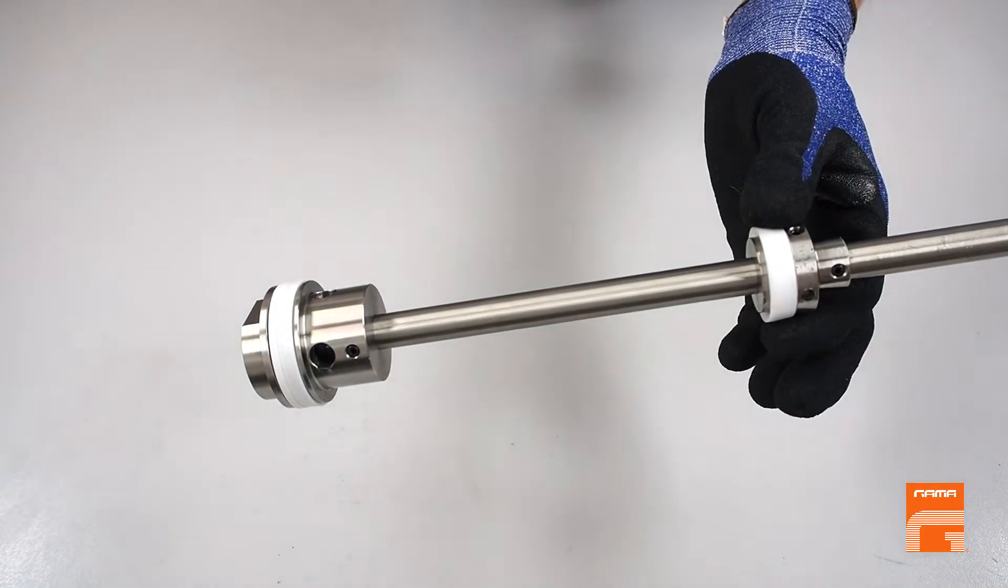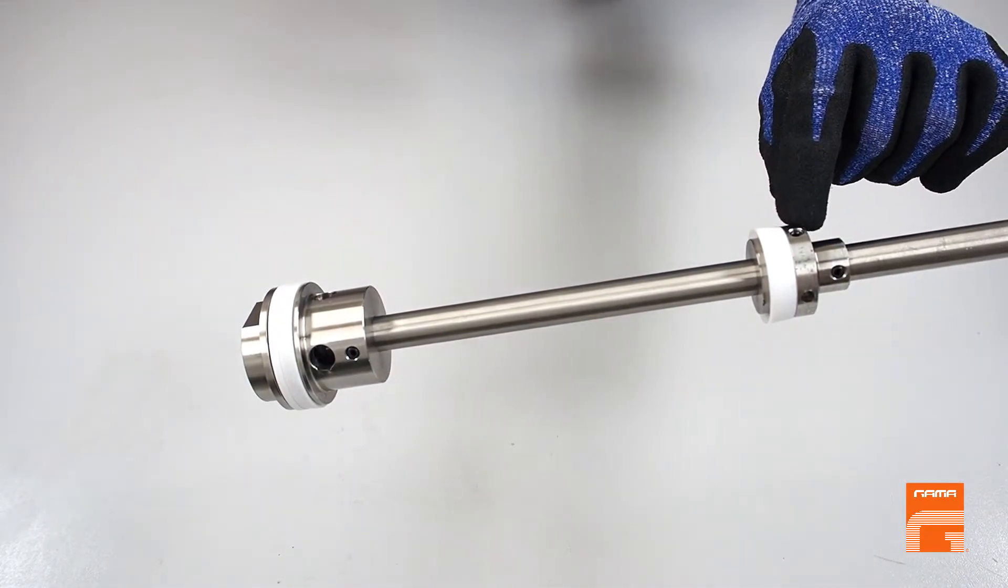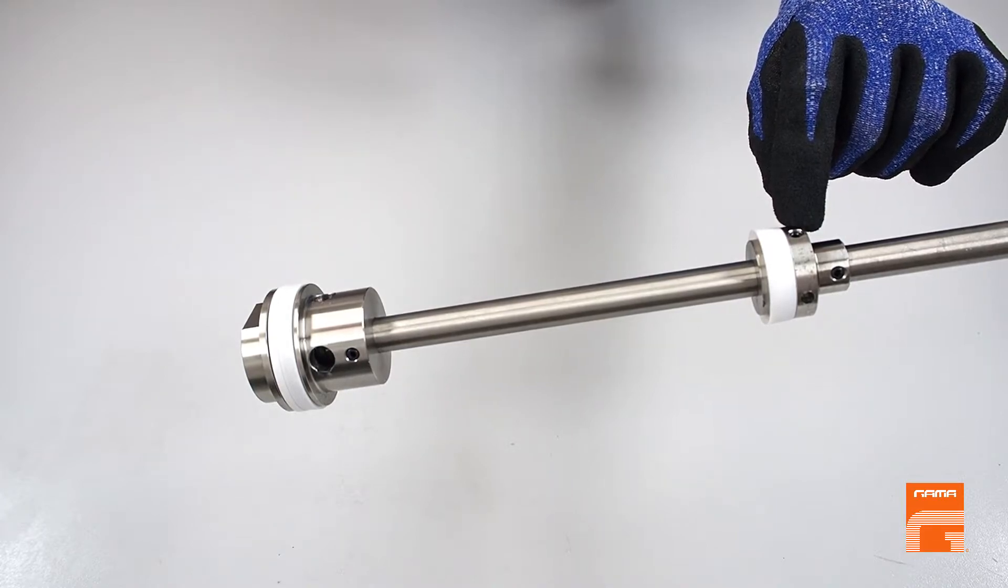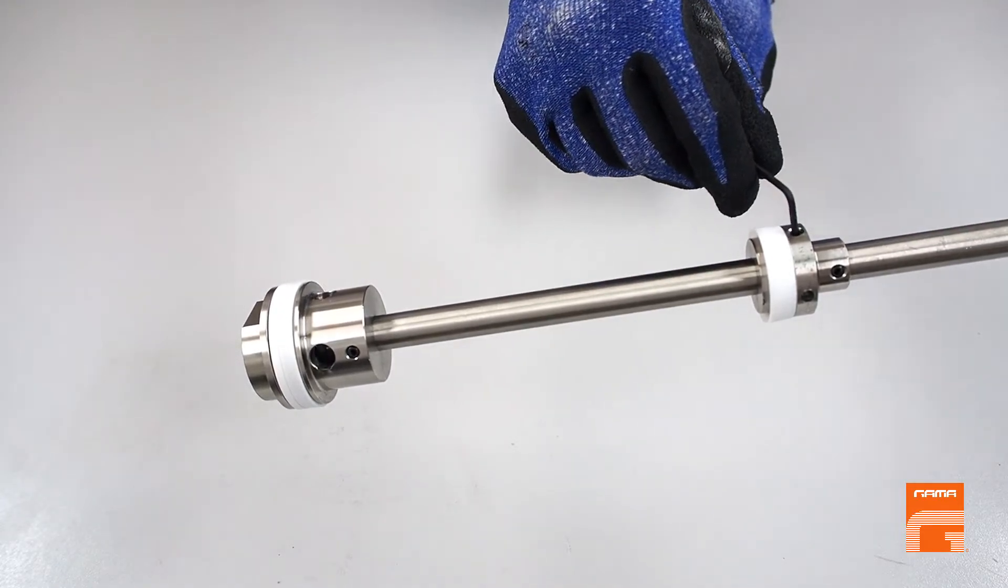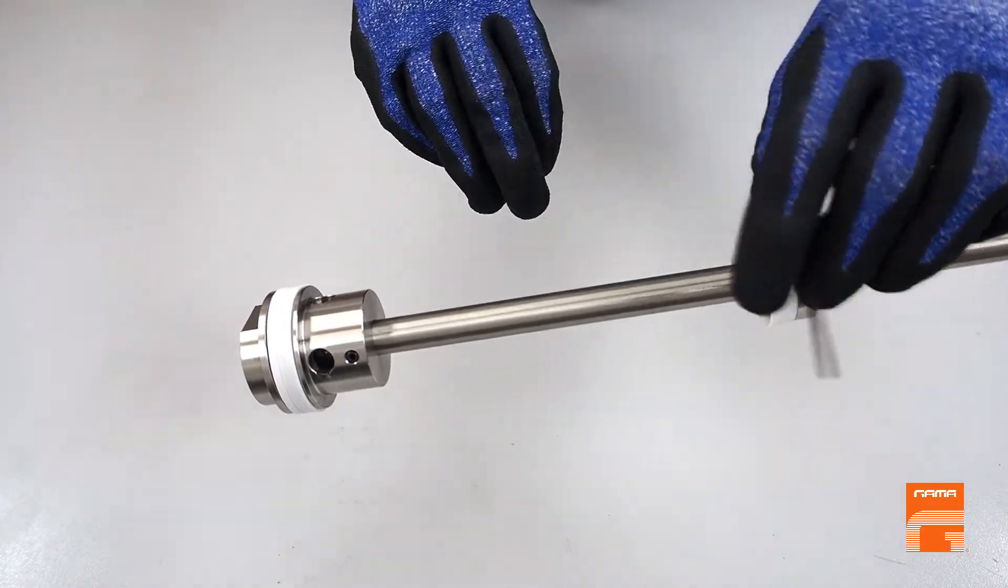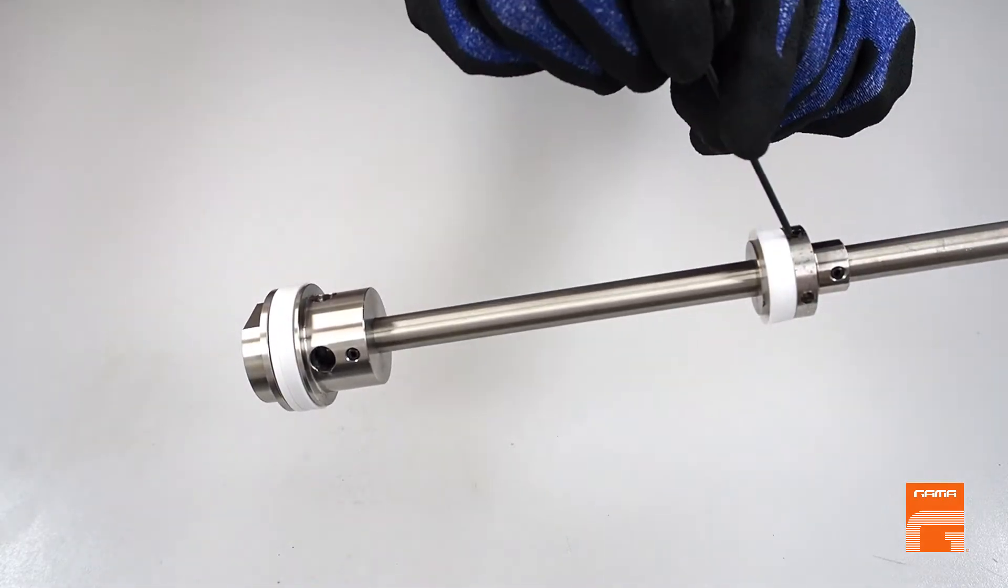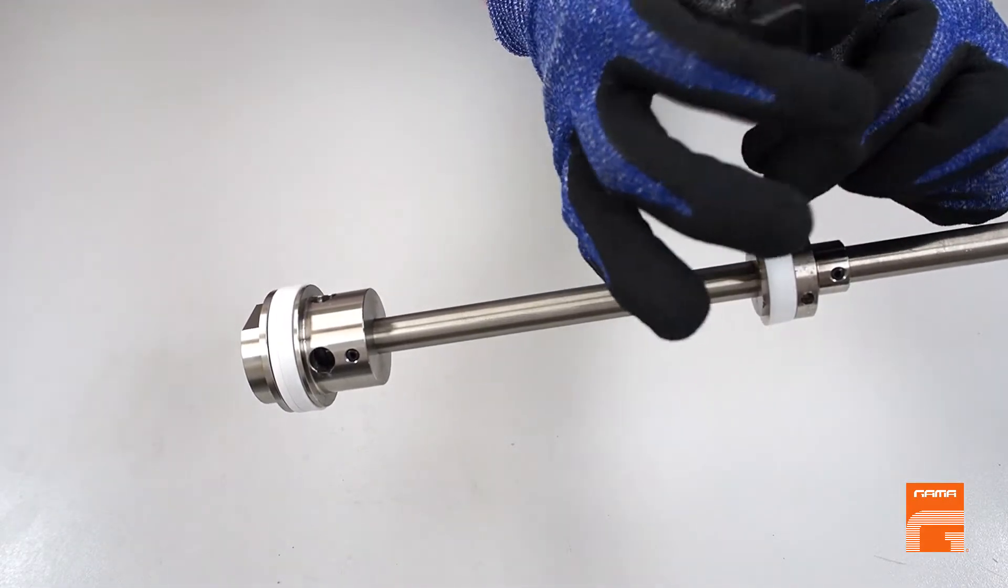When it comes to the small seal replacement, first of all you have to find the allen screw and take it out using a 2.5 millimeter allen key.